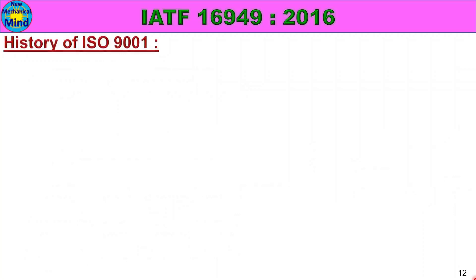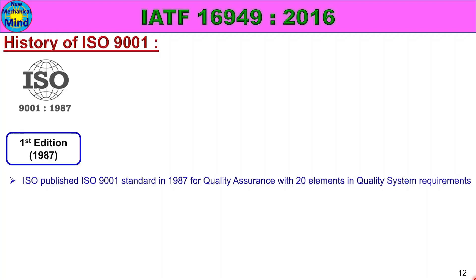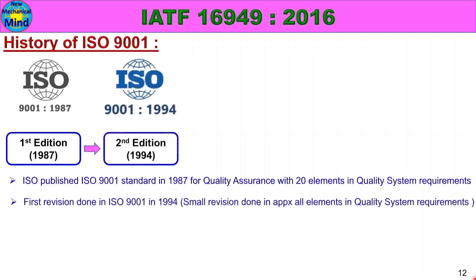The history of ISO 9001: The first edition was published in 1987, establishing quality system requirements with 20 elements. The first revision — second edition — was done in 1994, with small revisions to approximately all elements of the quality system requirements.